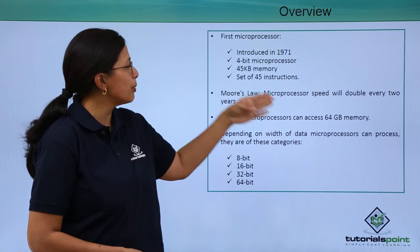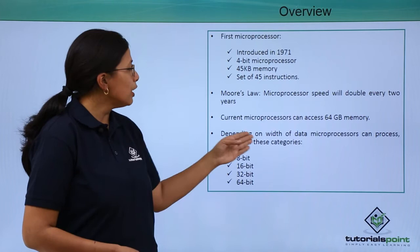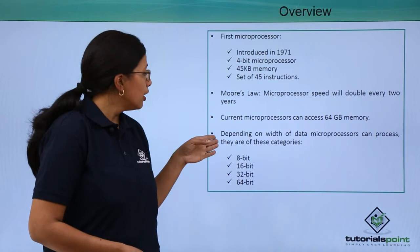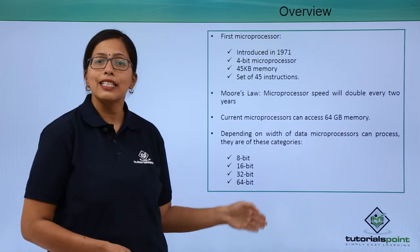That is the evolution that we have come through. Depending on the width of data that the microprocessors can process at a single time, they are of these categories: 8-bit, 16-bit, 32-bit, and 64-bit.